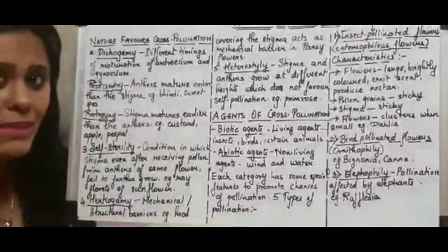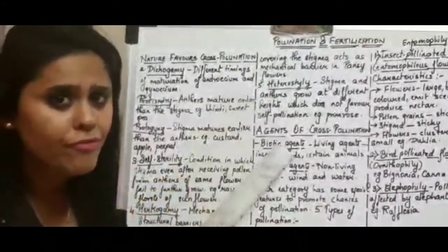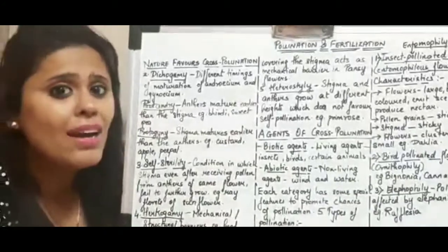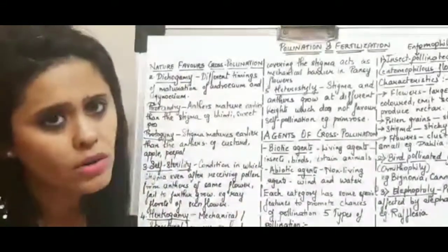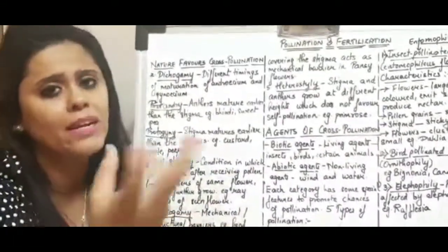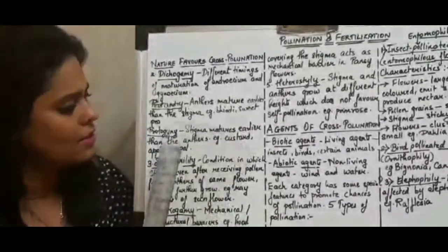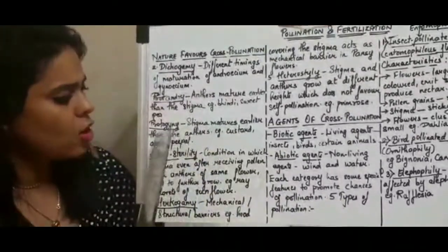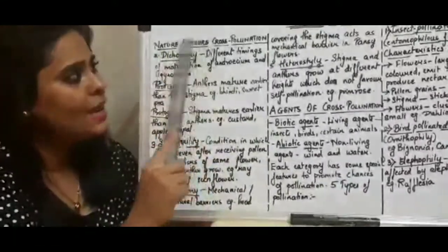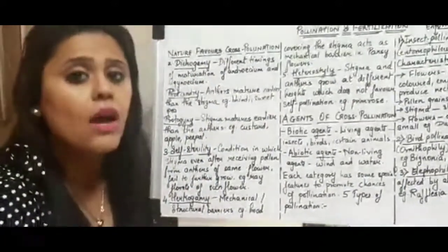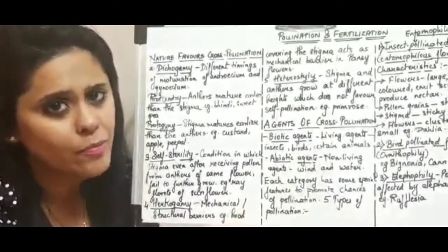Protogyny means here the female reproductive part — the stigma — matures before the anther. The stigma is receptive, waiting for the pollen to drop, but the pollen is not yet matured; the anther is not yet mature enough to burst open and release the pollen. Common examples are custard apple, common apple, and Peepal flowers. This is the second important device that favors only cross-pollination and not self-pollination.